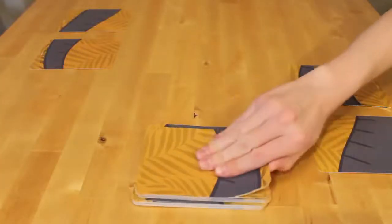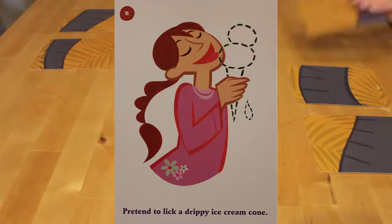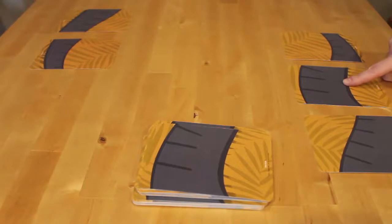The third round continues in the same manner. Draw a third card, read it aloud, place it face down next to the second card, perform the actions from the first card, then the second card, then the third card.